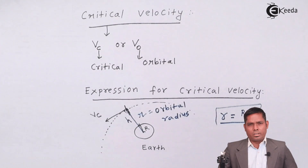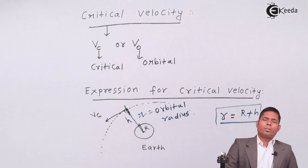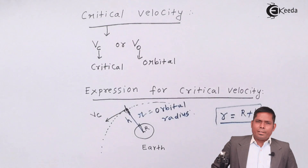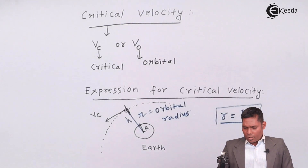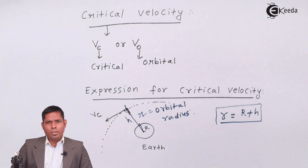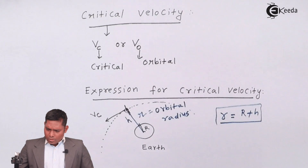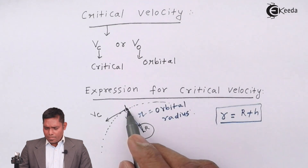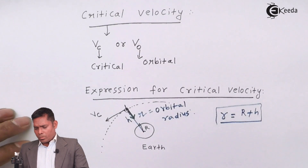For circular motion, we know that any object moving in a circular path requires a centripetal force. Who provides that centripetal force? In the case of Earth and an artificial satellite — though it is applicable to natural satellites as well — the satellite must be subjected to centripetal force directed towards the center of the Earth.